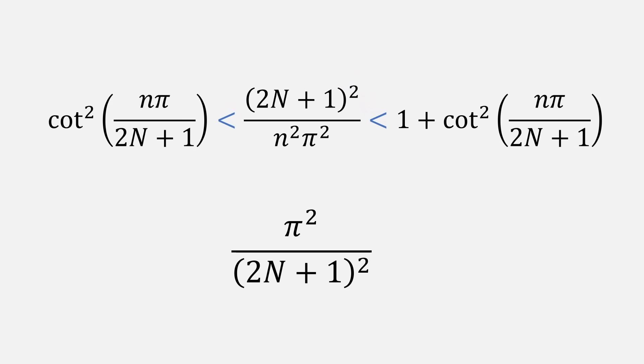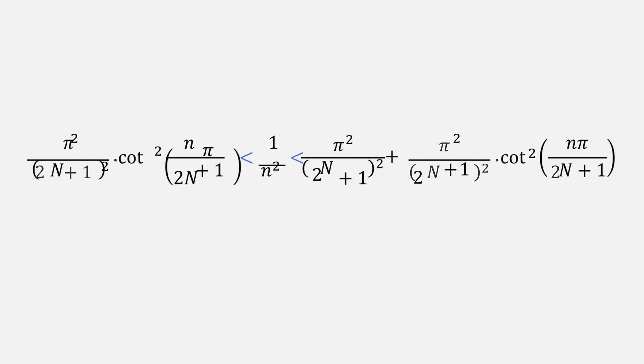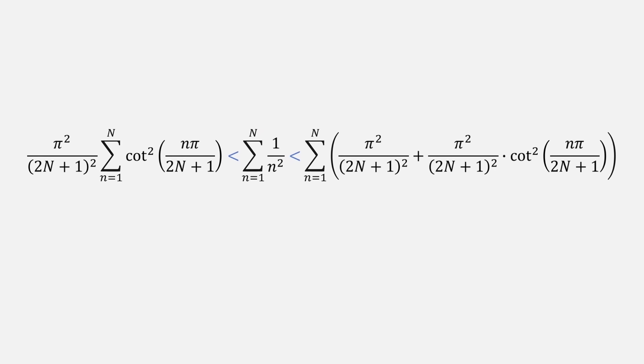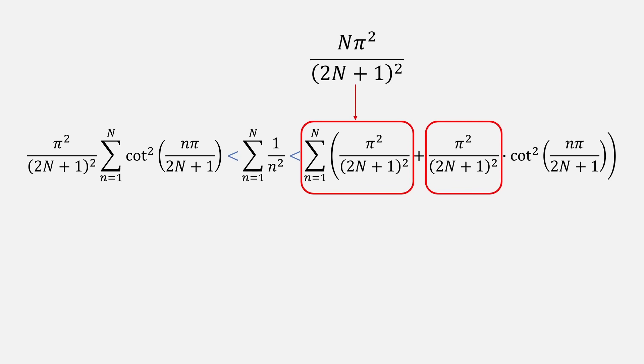Let's multiply all three expressions by pi squared over 2n plus 1 squared. That's now given us the exact expression we're interested in, 1 over n squared. Now we're going to sum all three expressions from 1 to big N. Now this term is a constant added up n times, so we can replace it with n pi squared over 2n plus 1 squared. And this is the same constant, which I'll put in front of the sum.